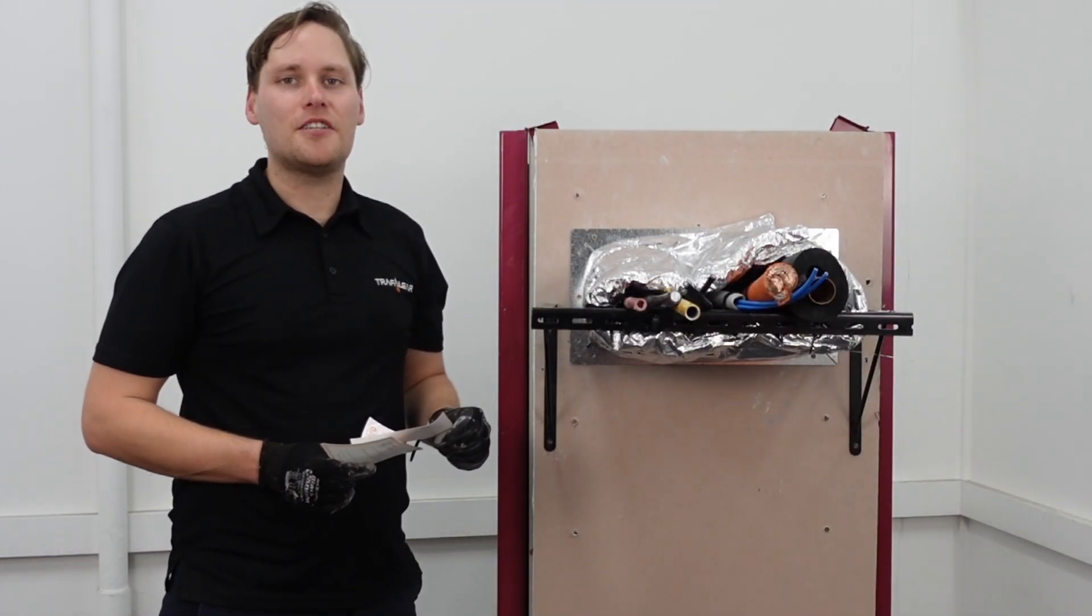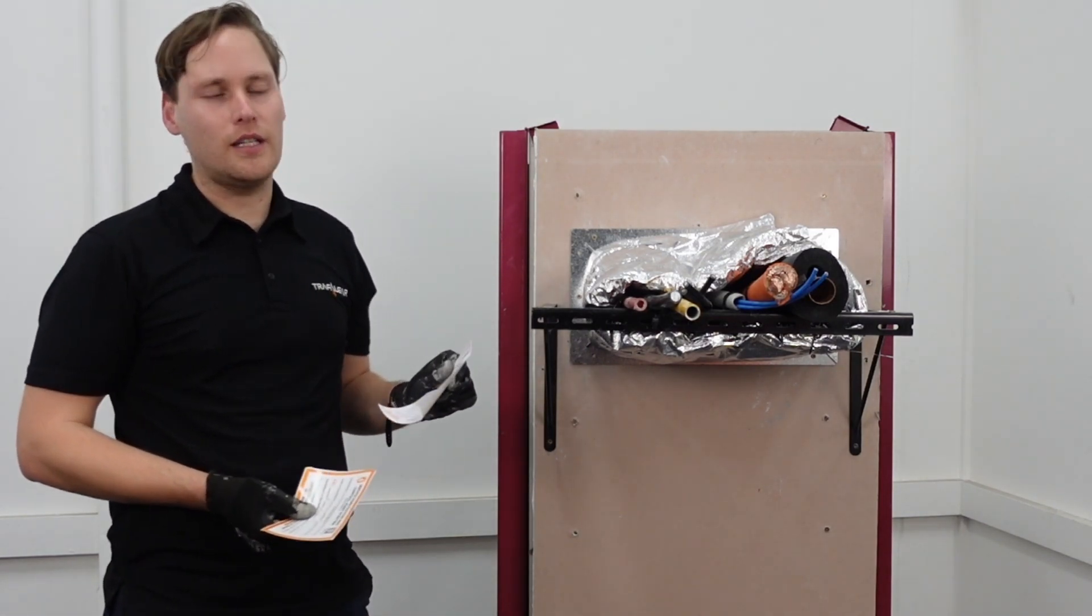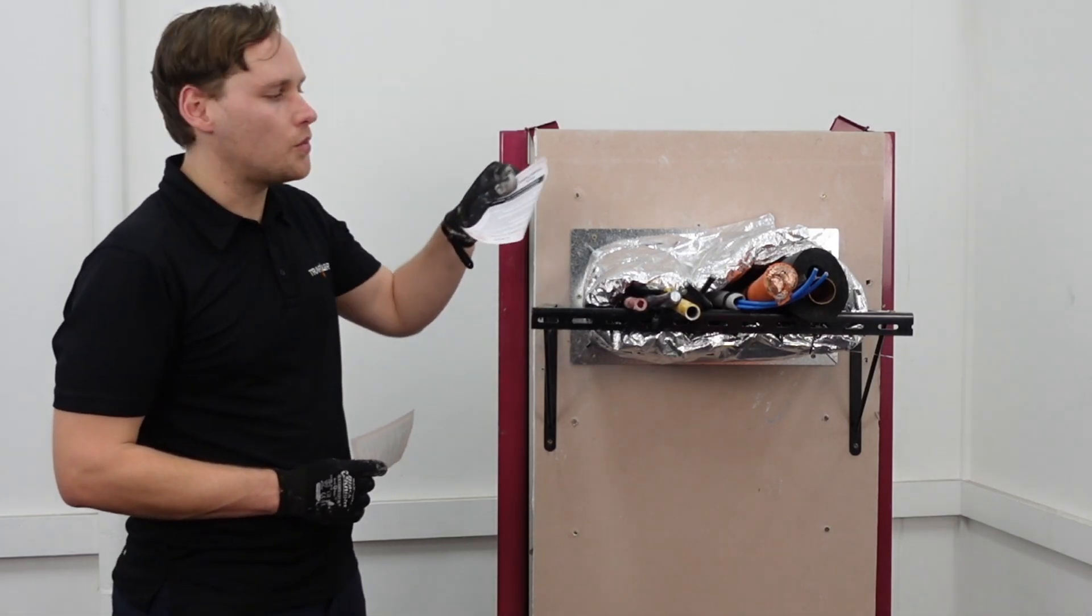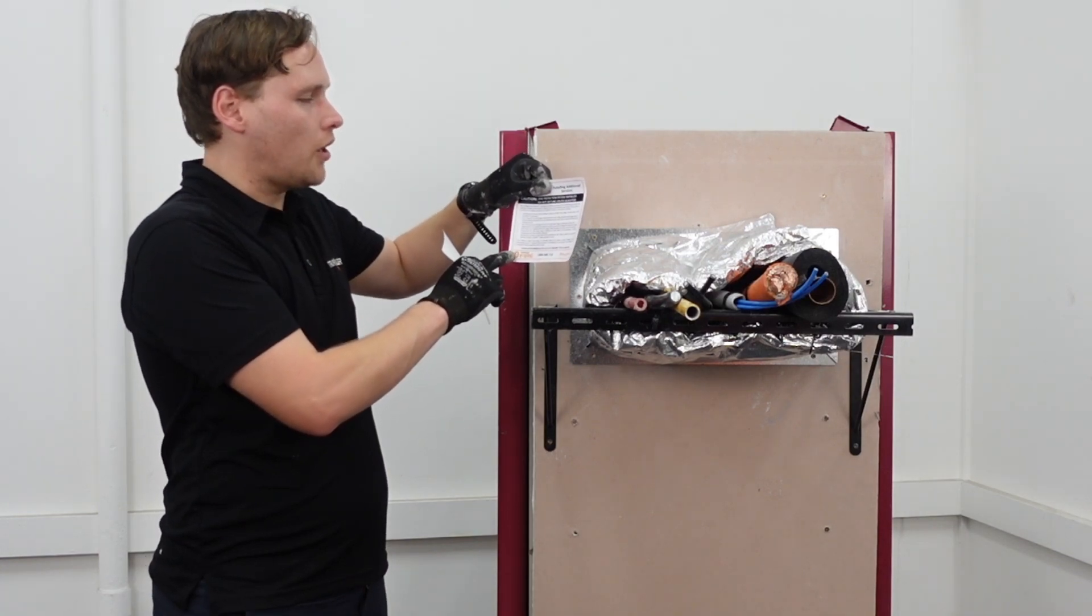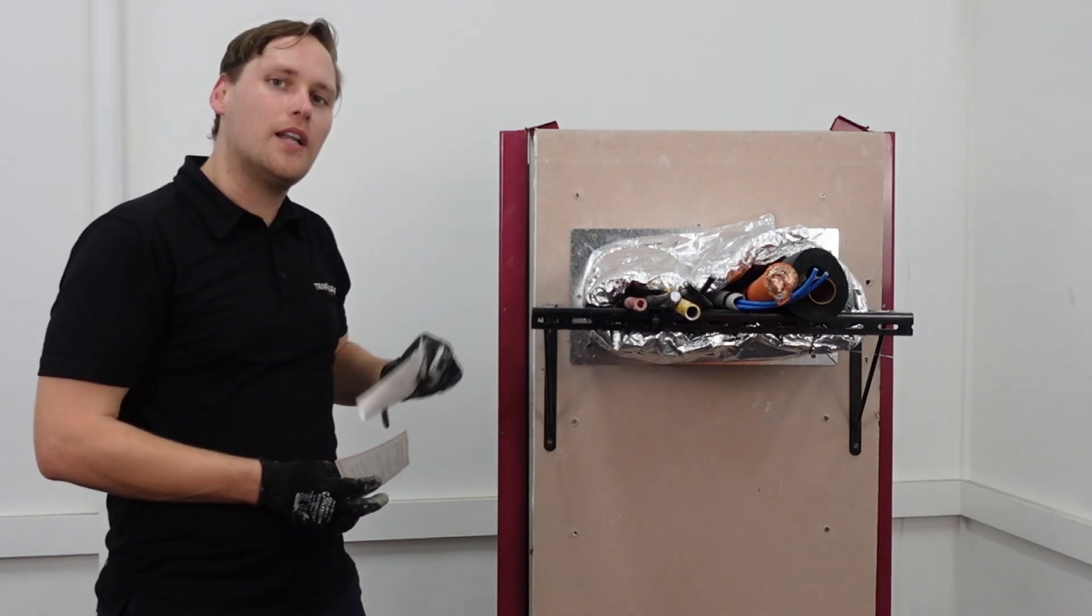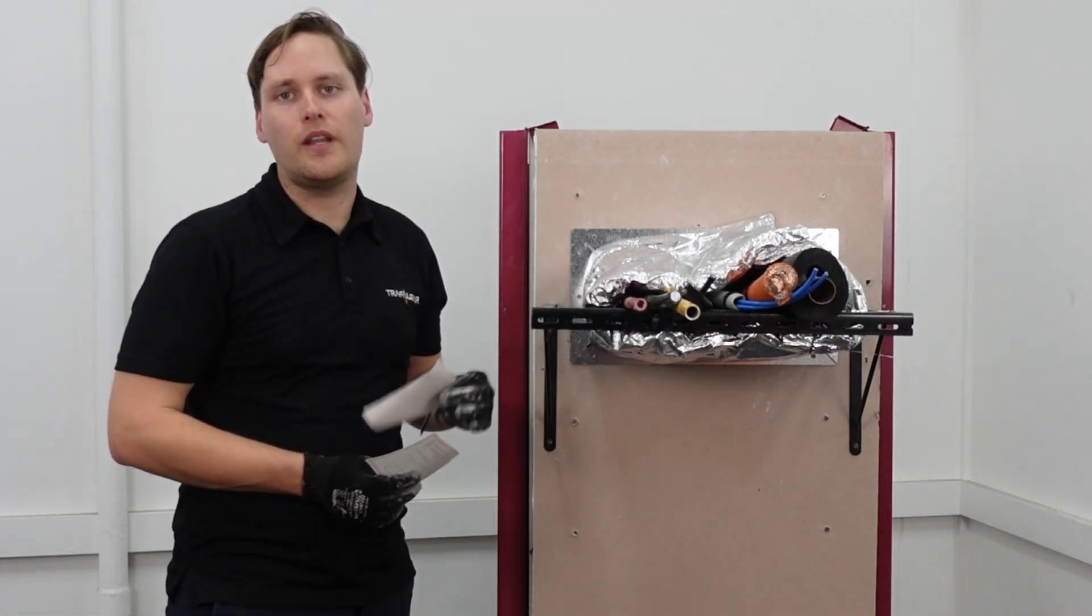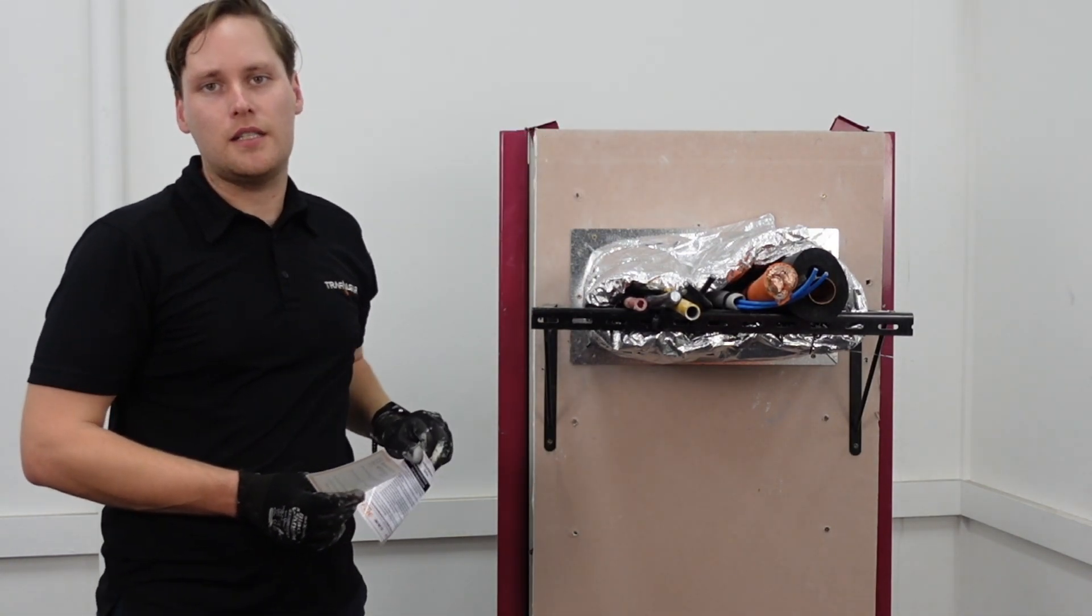Now once we're done with the actual installation we do need to look at paperwork and labeling. So there are two different stickers you can look at putting next to this service penetration. One of them actually comes in the box with the Superstopper and it is a sticker with instructions for the future owners of the building about how to run additional services. One of the main benefits of the Superstopper is you can just undo the wrap and run new services through the penetration without much hassle. So this is a great way to future-proof the penetration system.